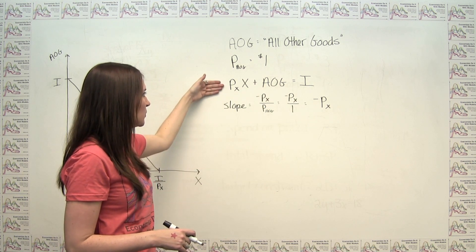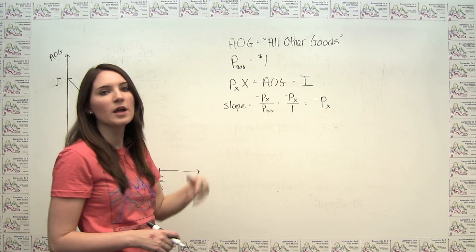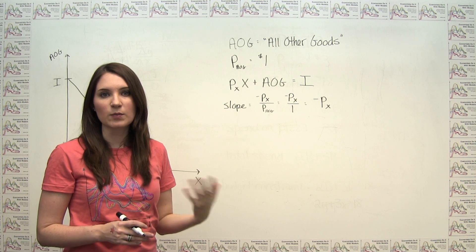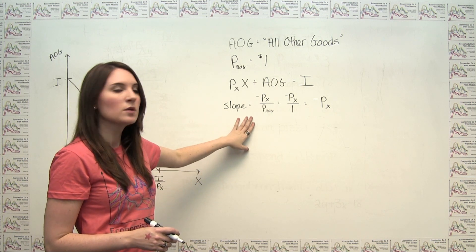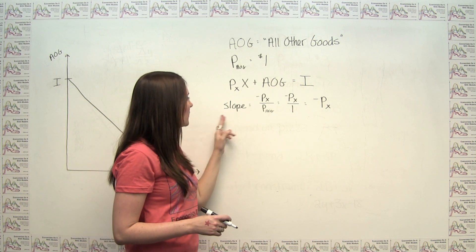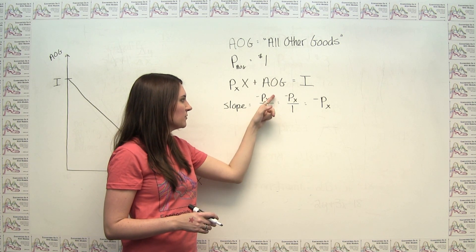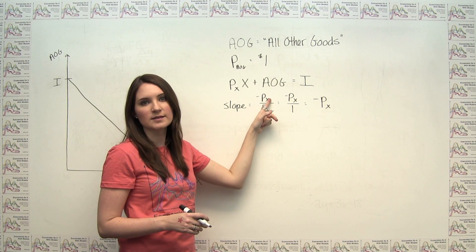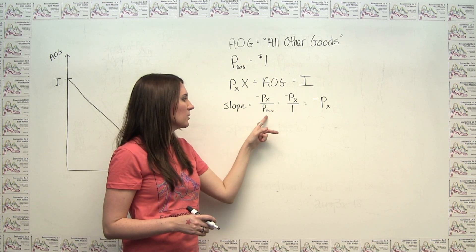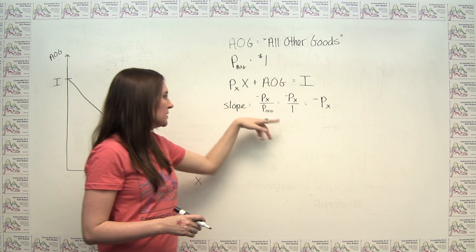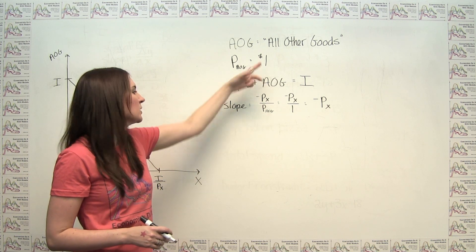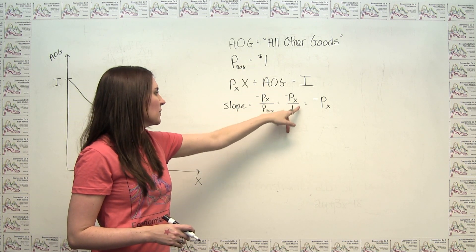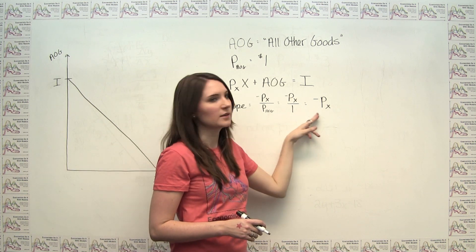So we get a slightly simpler form of our budget constraint, and we also notice that we get a slightly simpler form of the slope of our budget constraint. Because we said before that the slope of our budget constraint was just the negative of the price of the good on the x-axis divided by the price of the good on the y-axis. Well, in this case, that's just this all other goods price, which we said was one dollar. So this just becomes negative Px over one, or negative Px.